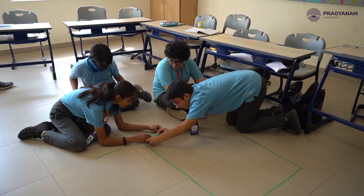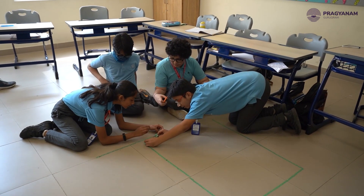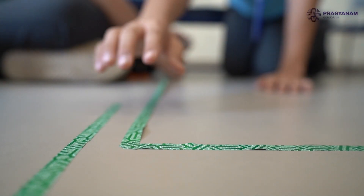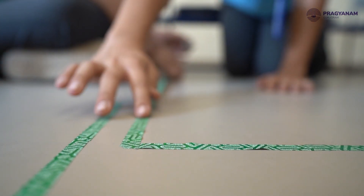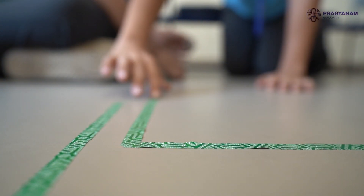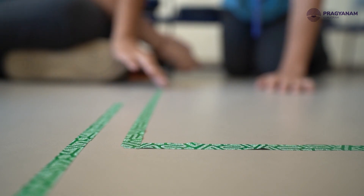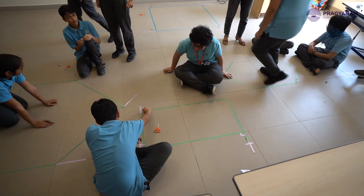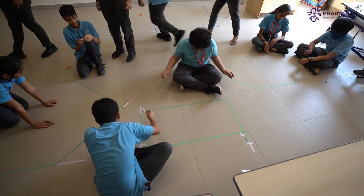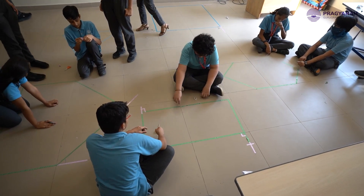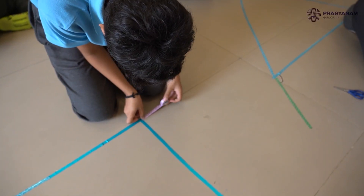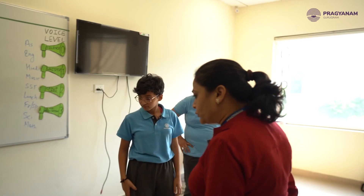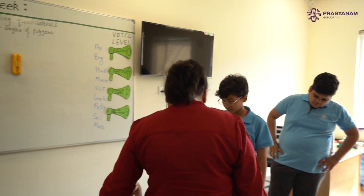There was one group that was late because their shape was a little more complex compared to the others. So the other groups came and helped them — 'okay, now take the tape here' — they were helping their friends. It was not competitive at all; they were empathetic towards their classmates.